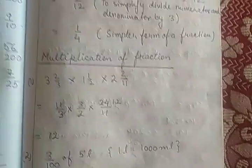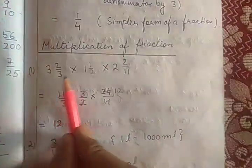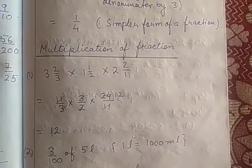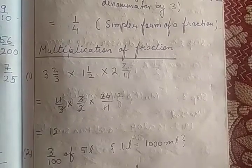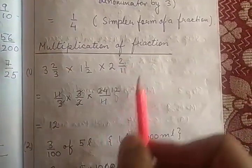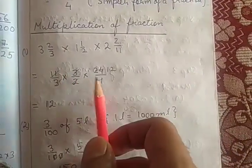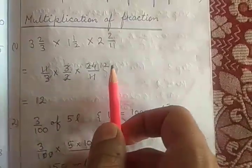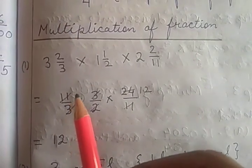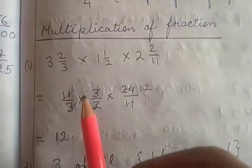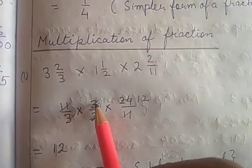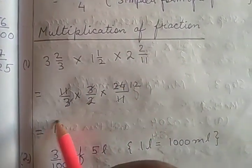Multiplication of fractions: here we have a mixed fraction — 3 and 2/3 into 1 and 1/2 into 2 and 2/11. You have to convert this mixed fraction into improper fraction first. After converting to improper fraction, you can do the cancellation part. You can divide the same number in the upper and lower part — even across different fractions in multiplication — and the answer will come after solving.